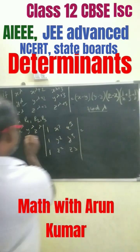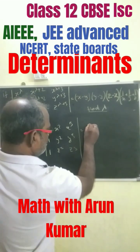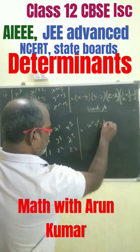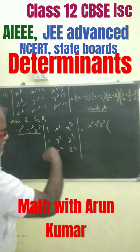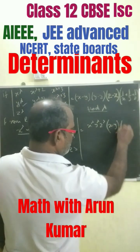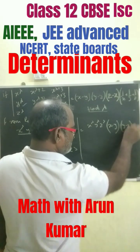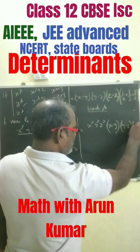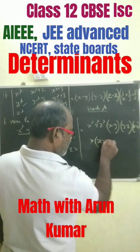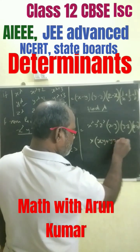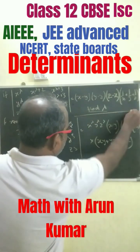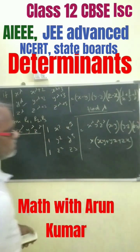Now we expand this. We get x to the power of lambda, y to the power of lambda, z to the power of lambda, multiplied by the expansion: (x minus y)(y minus z)(z minus x)(xy plus yz plus zx).